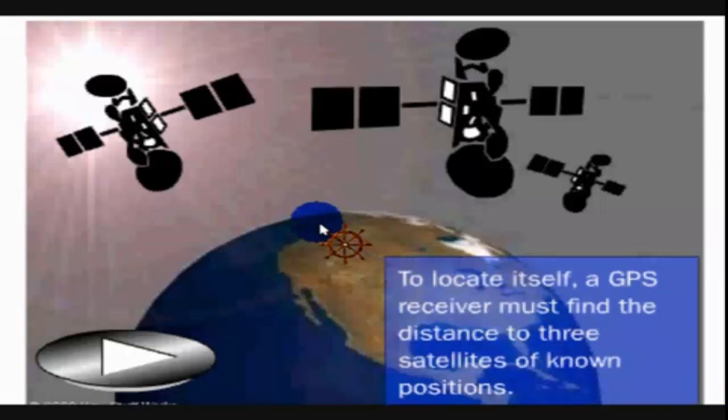Now let us see the trilateration principle and how it is used and implemented in the operation of GPS. Here we can see the surface of the Earth and United States of America in the picture.